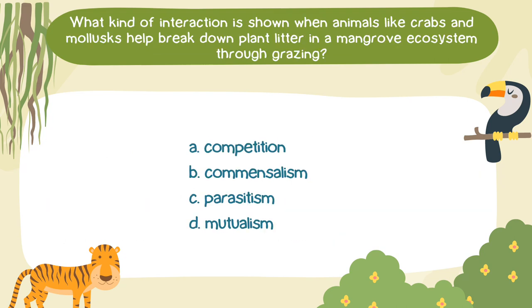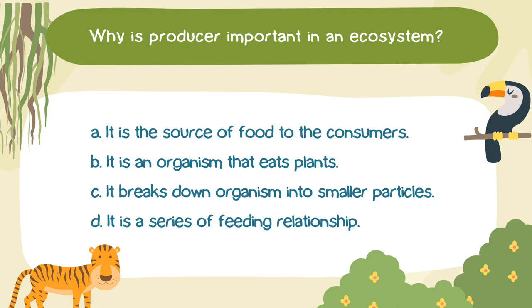What kind of interaction is shown when animals like crabs and mollusks help break down plant litter in a mangrove ecosystem through grazing? A. Competition; B. Commensalism; C. Parasitism; D. Mutualism. Why is a producer important in an ecosystem? A. It is the source of food to the consumers. B. It is an organism that eats plants. C. It breaks down organisms into smaller particles. D. It is a series of feeding relationships.